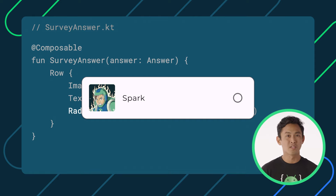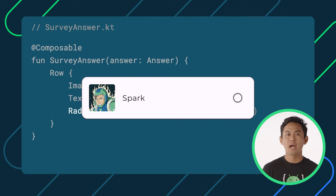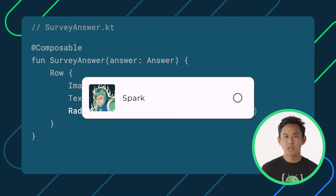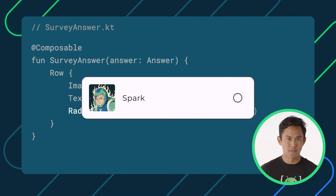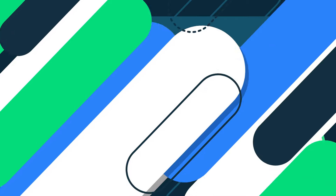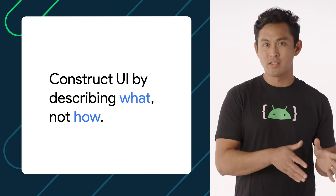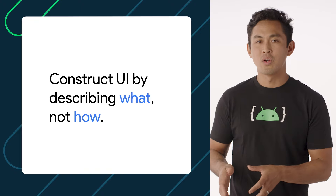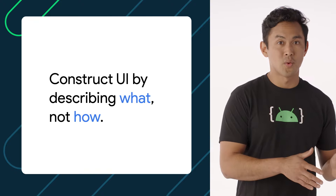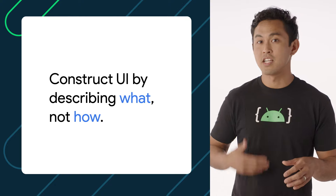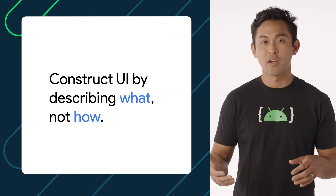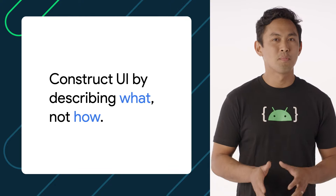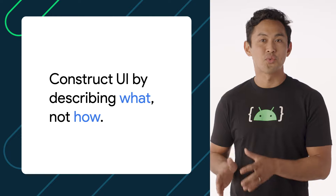Unlike in Views, the radio button doesn't hold its own state that automatically changes due to a user event. Rather, the radio button state is controlled by the values that are provided into it. This is what we mean by what, not how. We're declaring what our UI should look like by providing the necessary state to our UI functions, but we're not telling Compose how it should render that state.